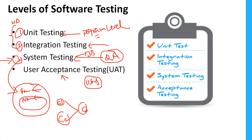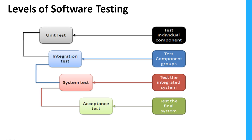To recap: the first level is unit testing, the second is integration testing, the third is system testing where the actual QA team is involved, and the last is user acceptance testing performed by the users. After that, deployment happens — that's the last stage. In the next video I'll discuss each of these testing levels in detail. Thanks for watching, and please subscribe to the channel for more updates.